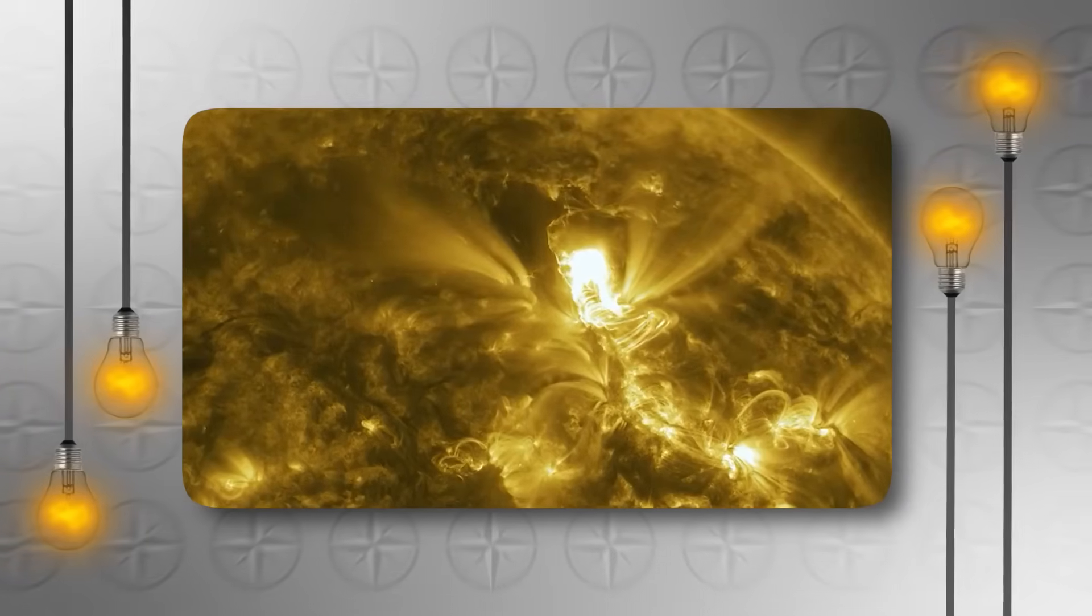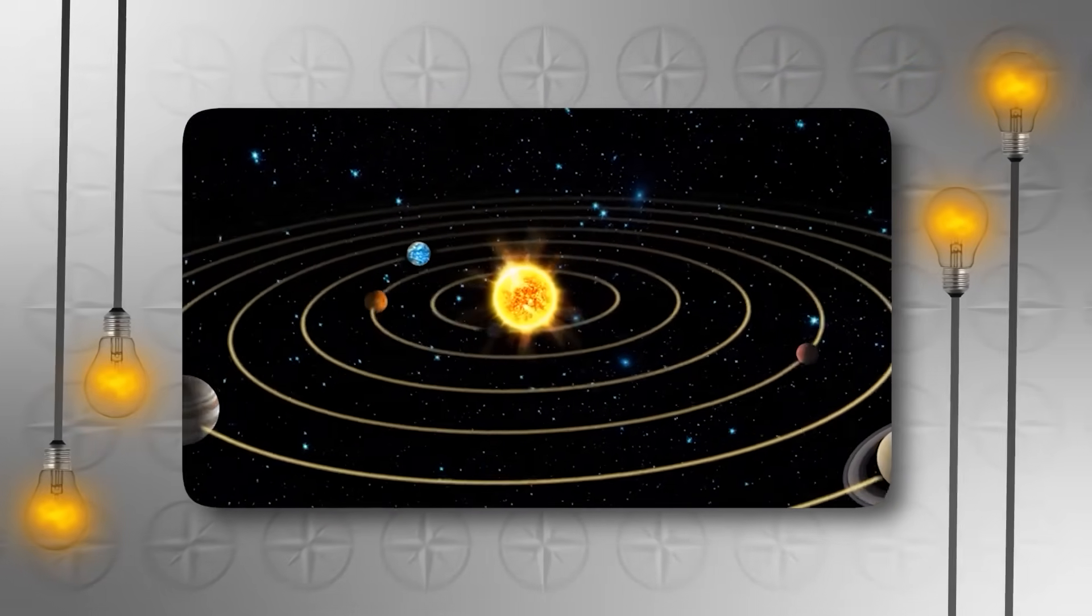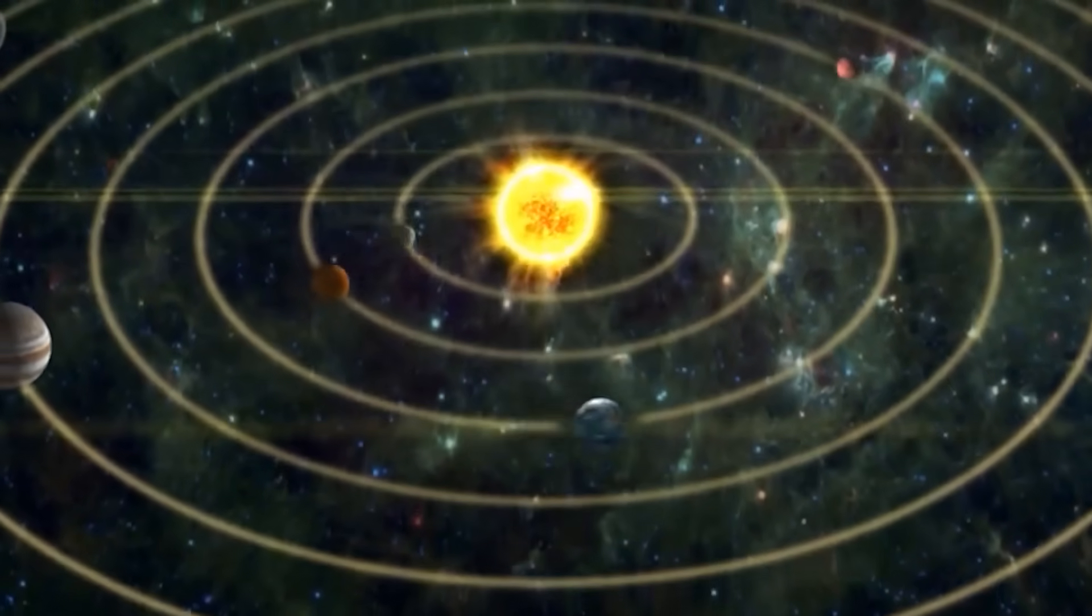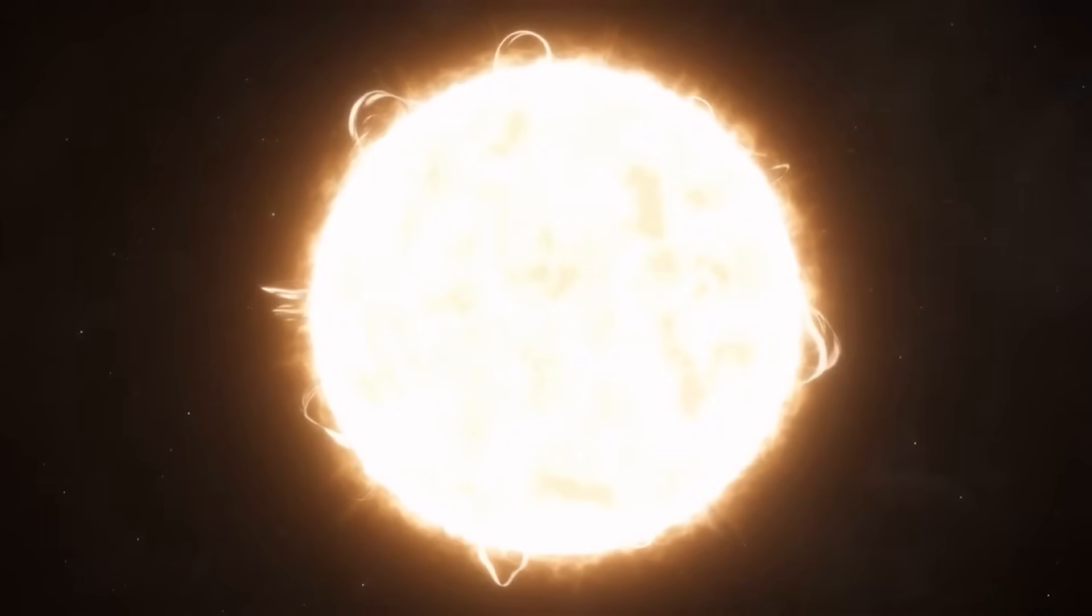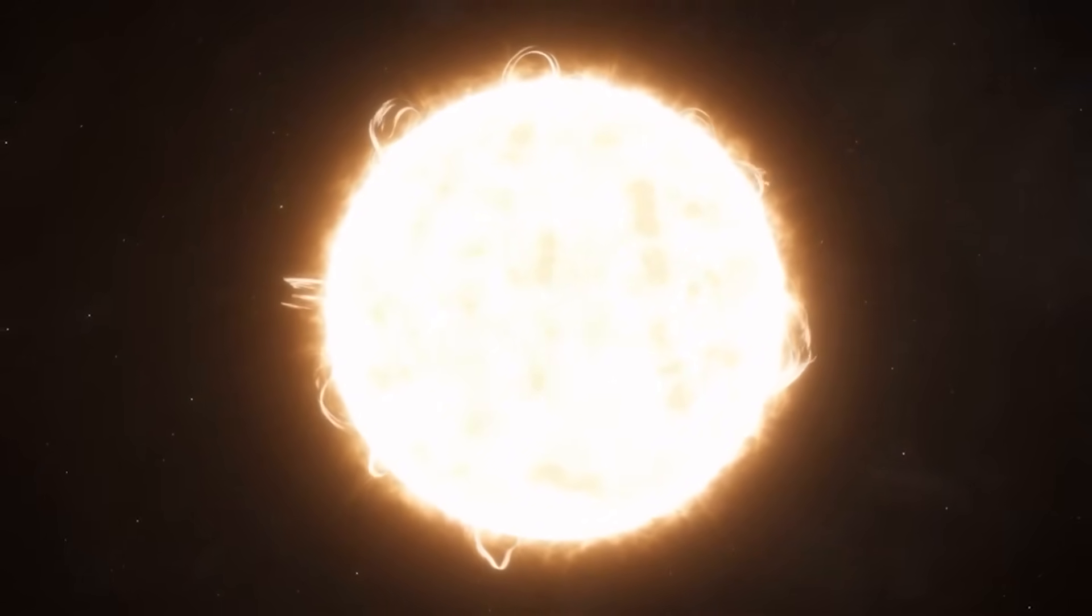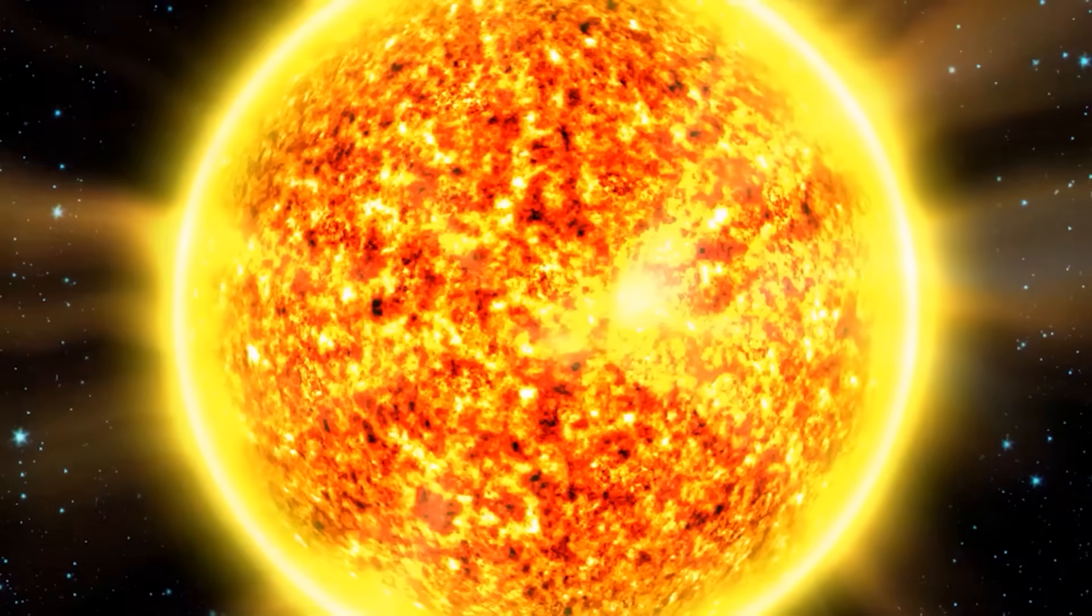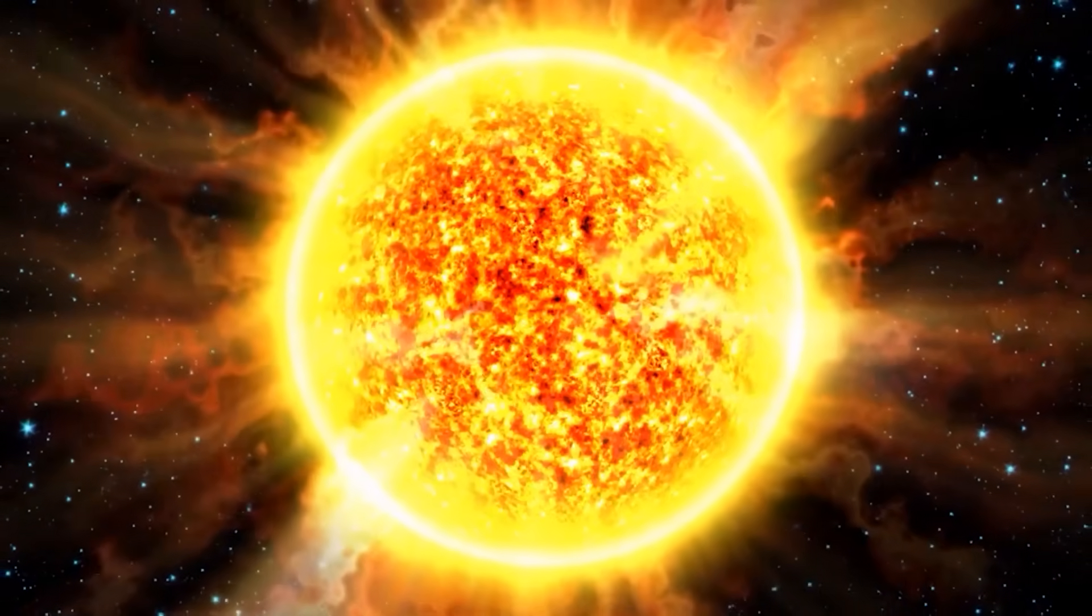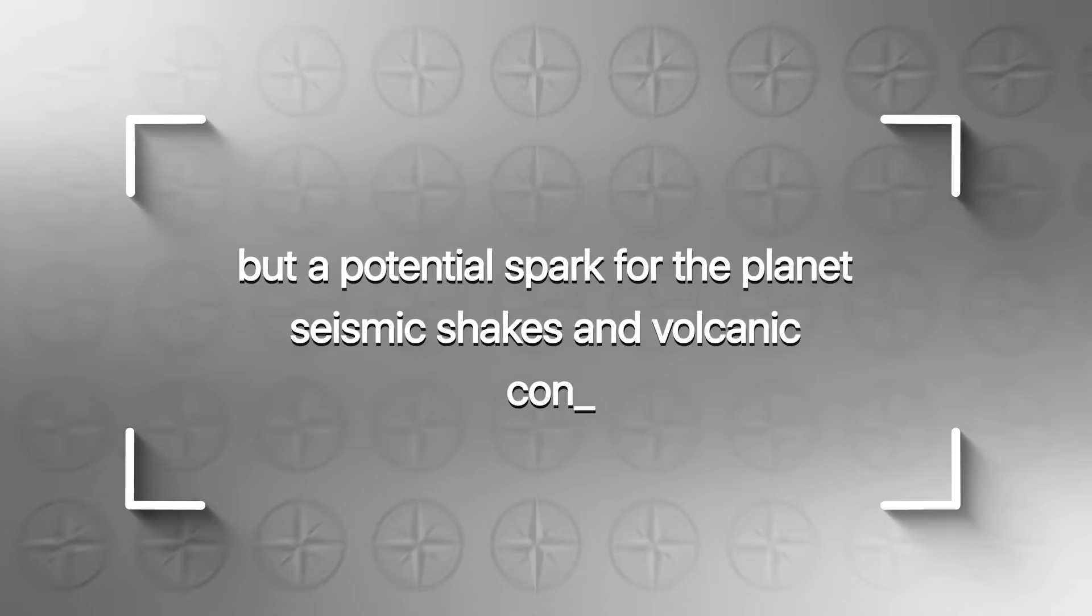Meanwhile, high above, the sun has grown volatile. Major solar flares have emerged, opening coronal holes and sending energetic streams across the solar system to Earth. Their influence may be reaching farther than first imagined, reaching through the atmosphere and down to the tectonic heart of our planet. Could the sun, at 93 million miles away, be not just Earth's source of daylight, but a potential spark for the planet's seismic shakes and volcanic convulsions?